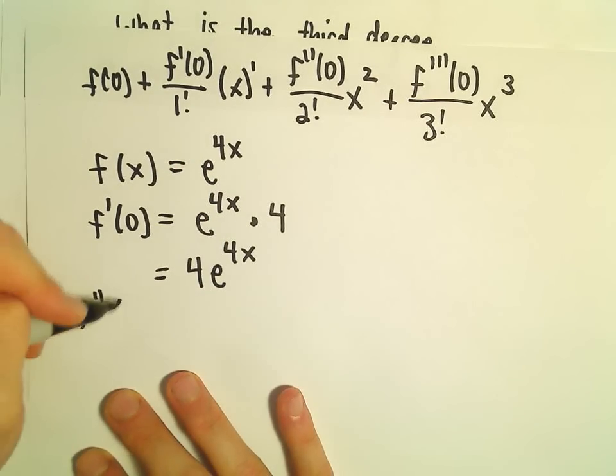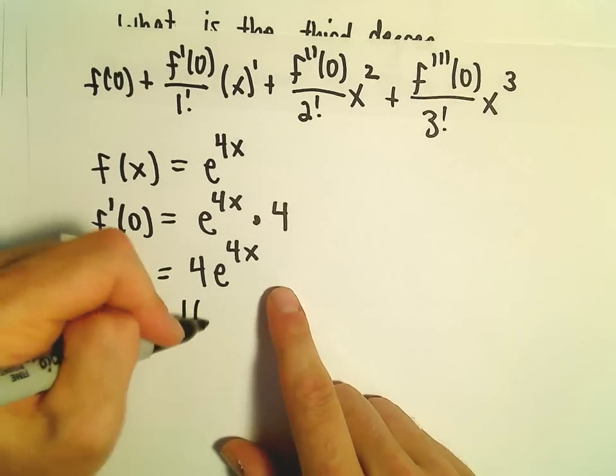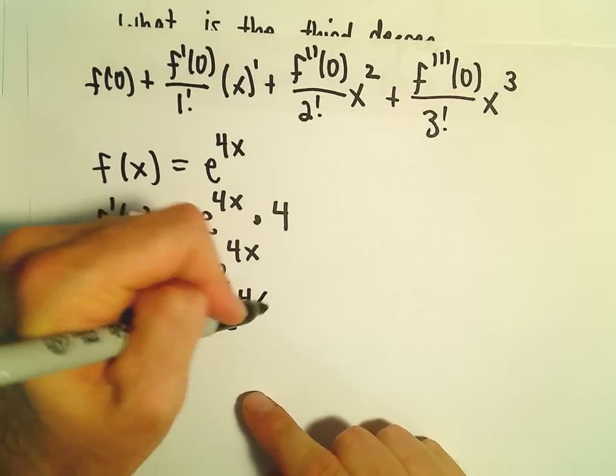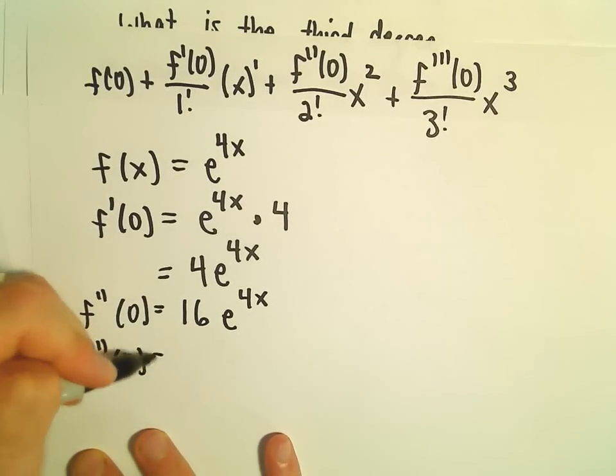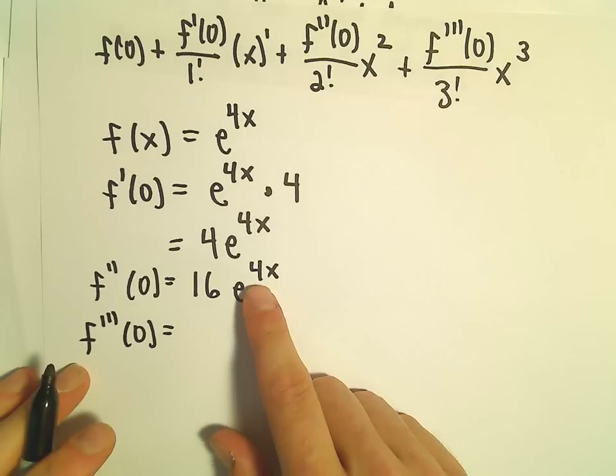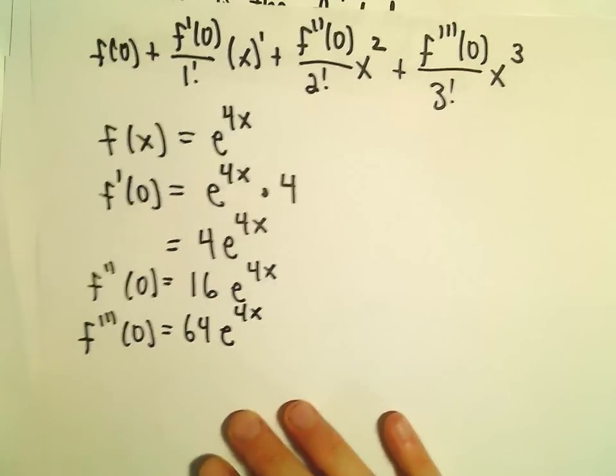When we take the second derivative, we get e^(4x) times another 4, giving us 16e^(4x). For the third derivative, we multiply by another 4, giving us 64e^(4x).